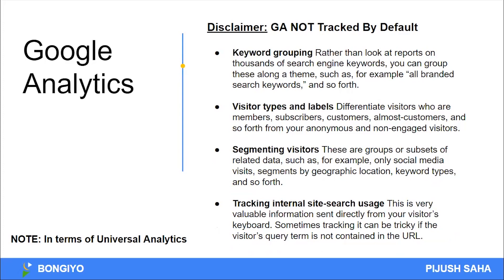Keyword grouping and channel grouping — if you have many channel groupings, keyword grouping such as branded keywords versus non-branded keywords, these need to be set up manually. Visitor types and levels — for example, identifying who is a member, subscriber, customer, or high-value customer — these segmentations need to be set up separately. By default, segmenting visitors by location or logged-in versus not-logged-in users is not done automatically; advanced level segmentation must be configured manually.